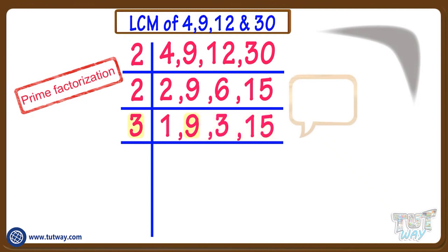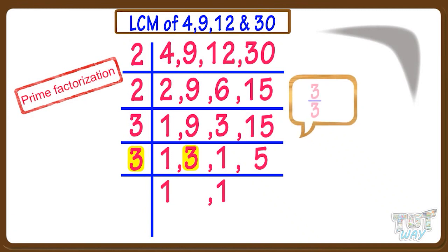If there is 1, simply write it as it is. 9 divided by 3 equals 3. 3 divided by 3 equals 1. 15 divided by 3 equals 5. Now again, take 3. As 1 number is there which can be divided by 3. Now we can't take 3, as no number can be divided by 3. Now next prime number is 5.